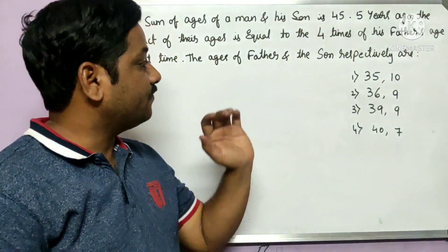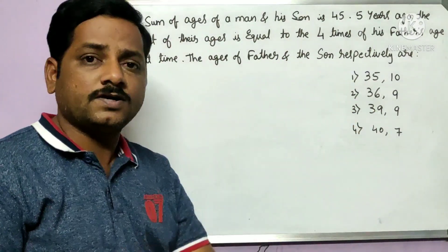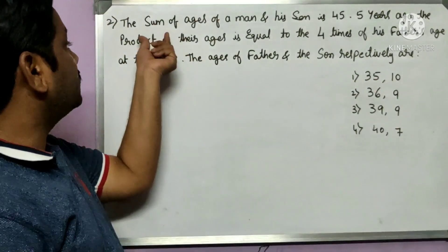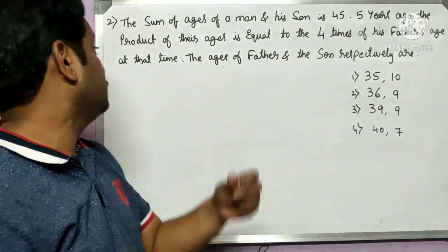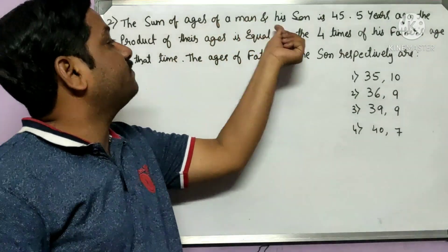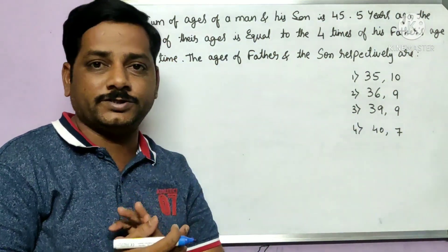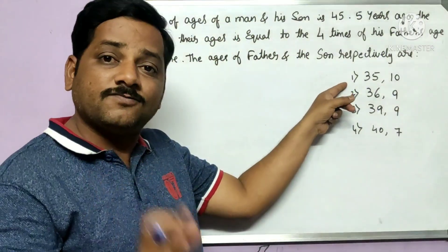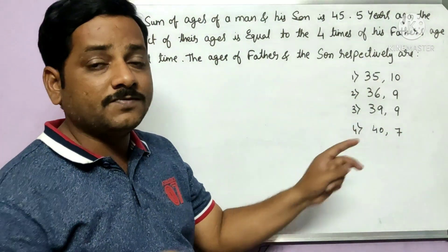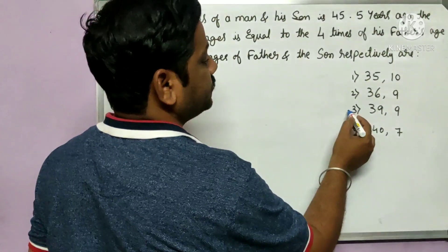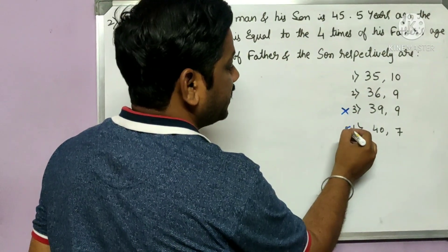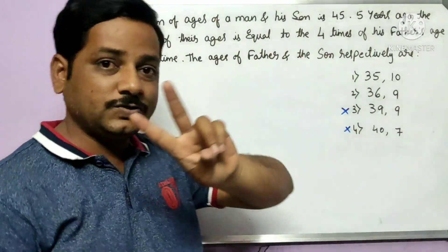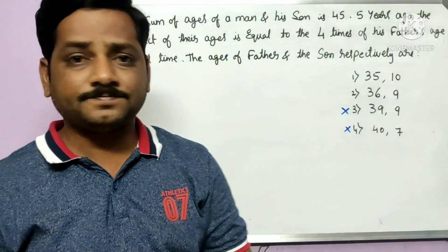For the shortcut, first look at all the options and check whether they are valid. The statement says the sum of ages of man and son is 45. So directly check each option: 35 + 10 = 45 ✓, and the other valid option also sums to 45. The options that don't add up to 45 can be immediately eliminated, leaving only two valid options.